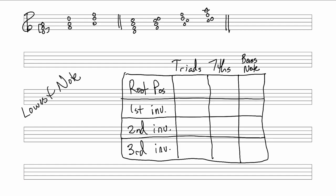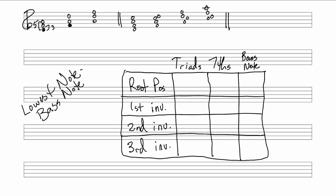The lowest note is the root — that's root position. The intervals created above that lowest note are a third and a fifth. On a first inversion triad, the lowest note is the third of the chord, and the intervals created above that note are a third and a sixth. On a second inversion triad, the lowest note is the fifth of the chord, and the intervals created above that note are a fourth and a sixth.